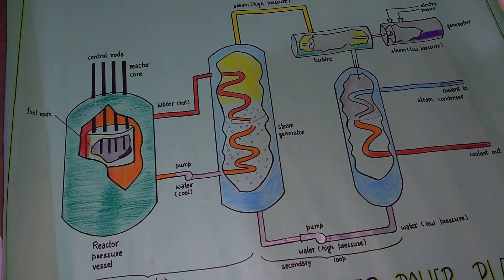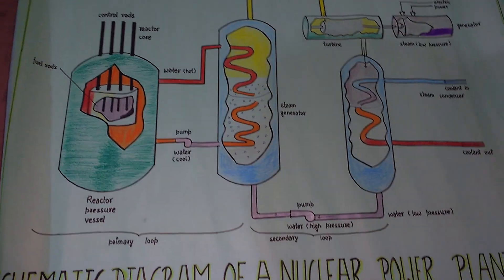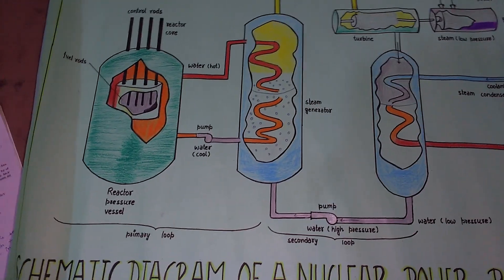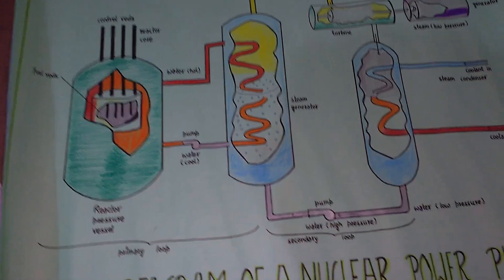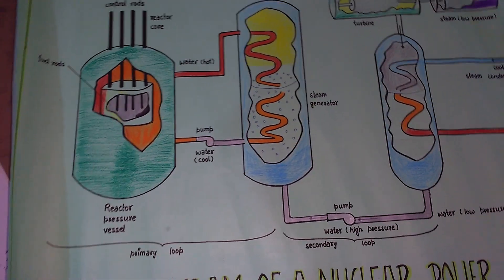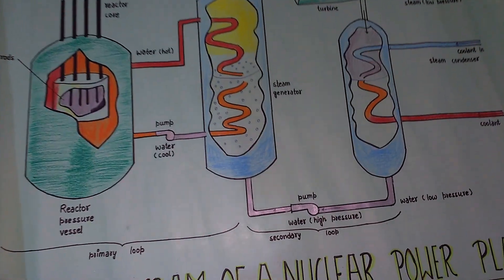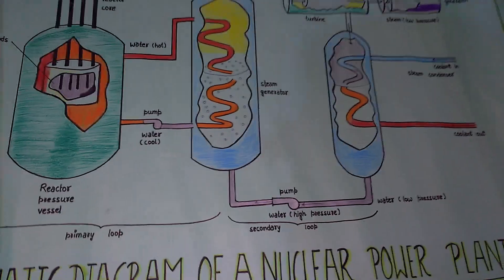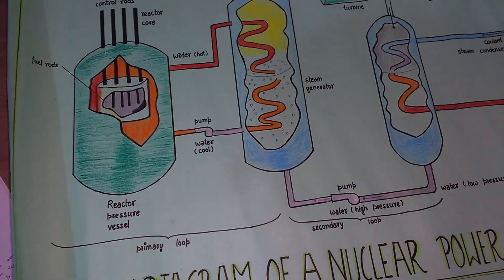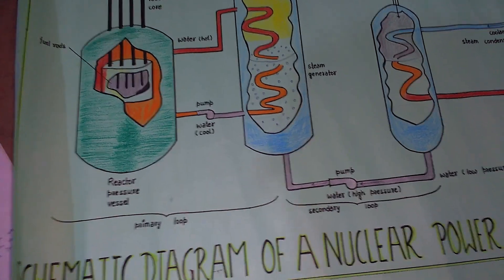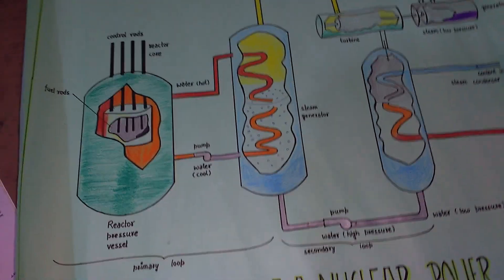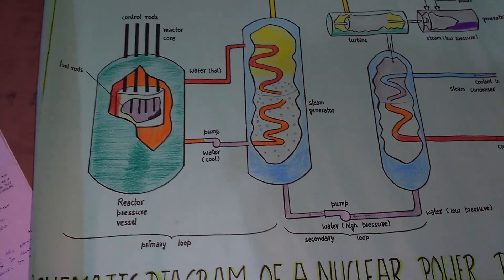The most familiar application of nuclear reactor is for generation of electric power. The fission energy appears as kinetic energy of the fission fragments and its immediate result is to increase the internal energy of the fuel elements and the surrounding moderator. This increase in internal energy is transferred as heat to generate steam to drive turbines.